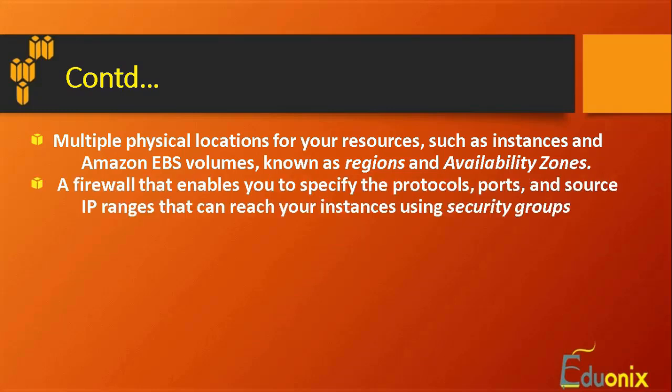A firewall is also enabled on your virtual machine so it can identify the protocols and ports that are allowed or trusted, so packets coming from those particular ports or protocols will be allowed. This firewall can be enabled on your EC2 instance, and the source IP ranges that can reach your instance are controlled using your security group. We will also discuss how to create security groups and define access permissions.